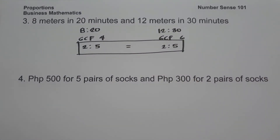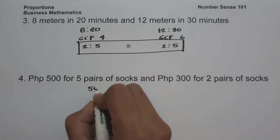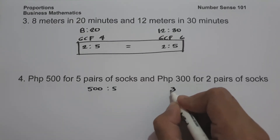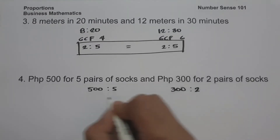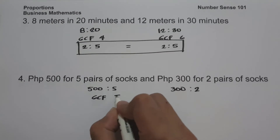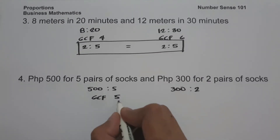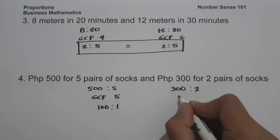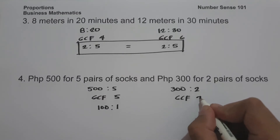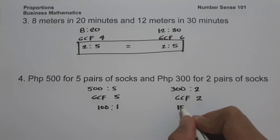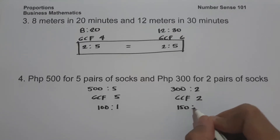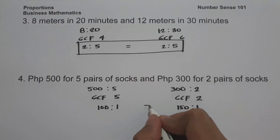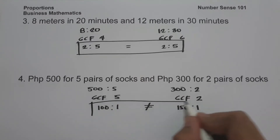On number four: 500 pesos for 5 pairs of socks and 300 pesos for 2 pairs of socks. We have 500 is to 5, and 300 is to 2. The GCF between 500 and 5 is 5, so 500 divided by 5 is 100 and 5 divided by 5 is 1. The GCF between 300 and 2 is 2, so 300 divided by 2 is 150 and 2 divided by 2 is 1. Since we don't have the same ratio, therefore they are not equivalent.